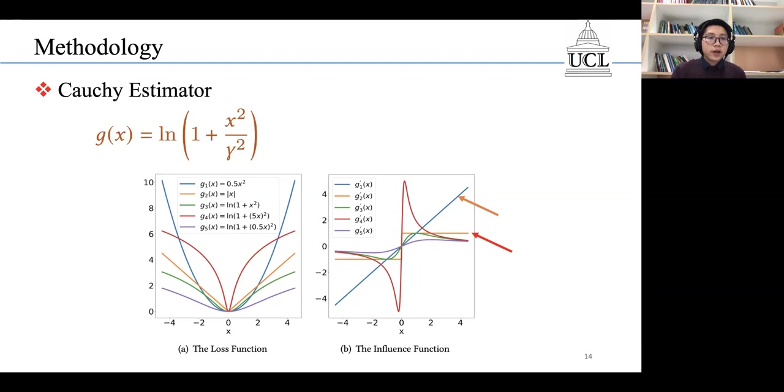Fortunately, we have the Cauchy Estimator whose loss function looks like this. The corresponding influence function looks like this.